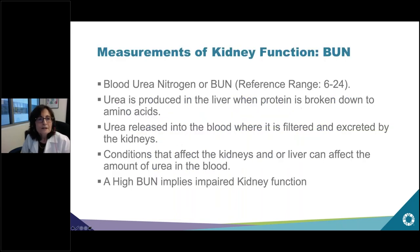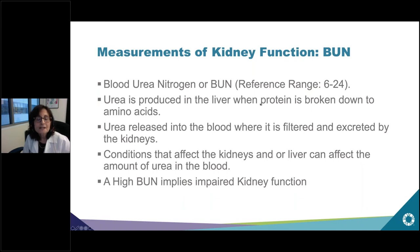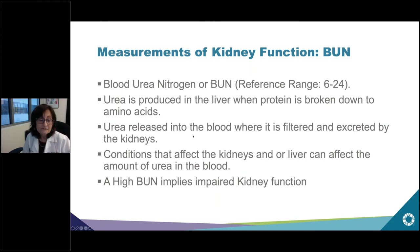BUN, or blood urea nitrogen, is a waste product called urea, produced in the liver when protein from your diet or tissues is broken down into amino acids. Urea made in the liver is released into the blood, filtered and excreted by the kidneys. Conditions that affect kidney function or the liver can affect the amount of urea in the blood. A high BUN implies impaired kidney function.